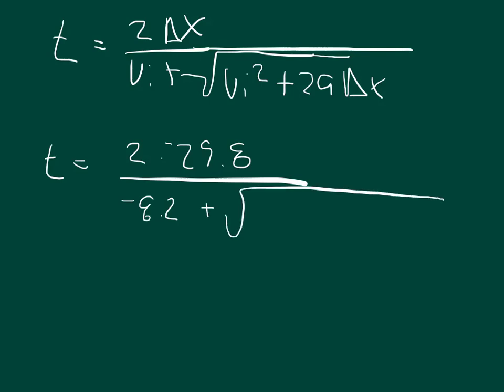Plus the square root of, and negative 8.2 squared is just going to be the same as 8.2 squared, so 8.2 squared plus 2 times negative 9.8 times negative 29.8, so these combine to make a positive number as well.